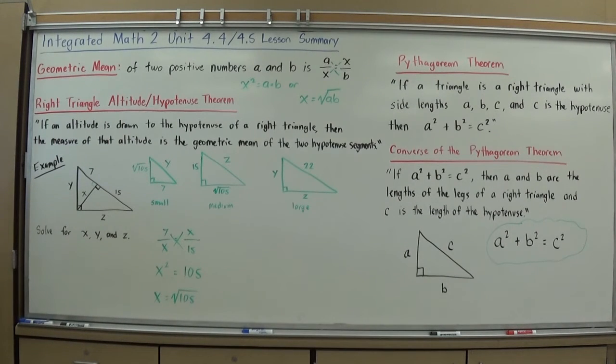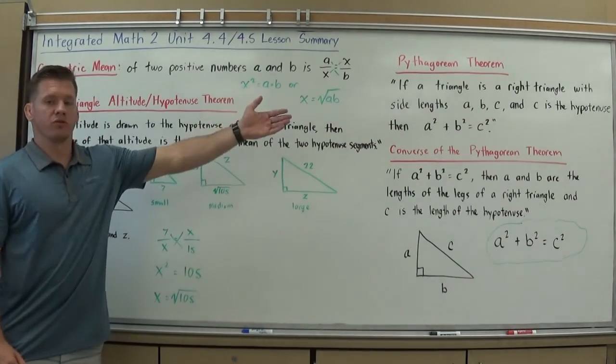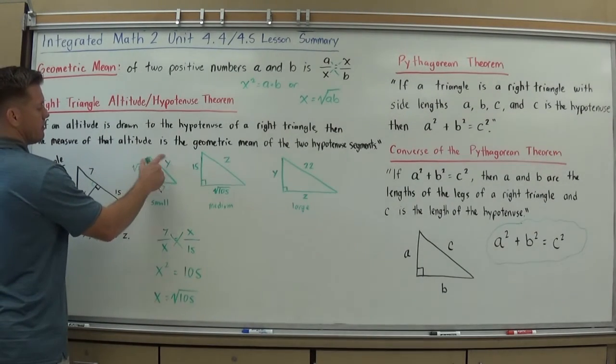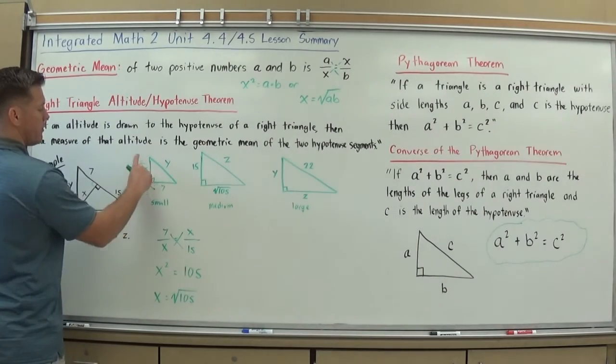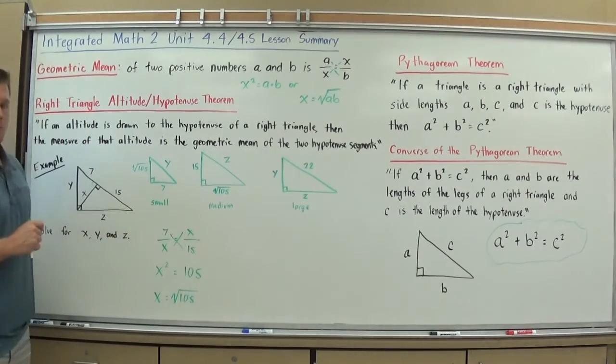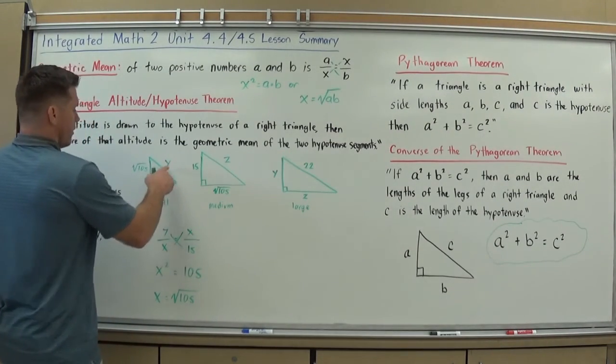And from here, I could set up another proportion if I like, if you really like the proportions. But since most of us know the Pythagorean theorem are probably pretty comfortable with the Pythagorean theorem, I can now use that to kind of finish solving. If I look here, I have two sides and a hypotenuse. So I can use my Pythagorean theorem to solve for Y. And I can use my Pythagorean theorem here to solve for Z. And that's what I'm going to do now. So I'm going to try that. So I'm going to do it for the small triangle first.